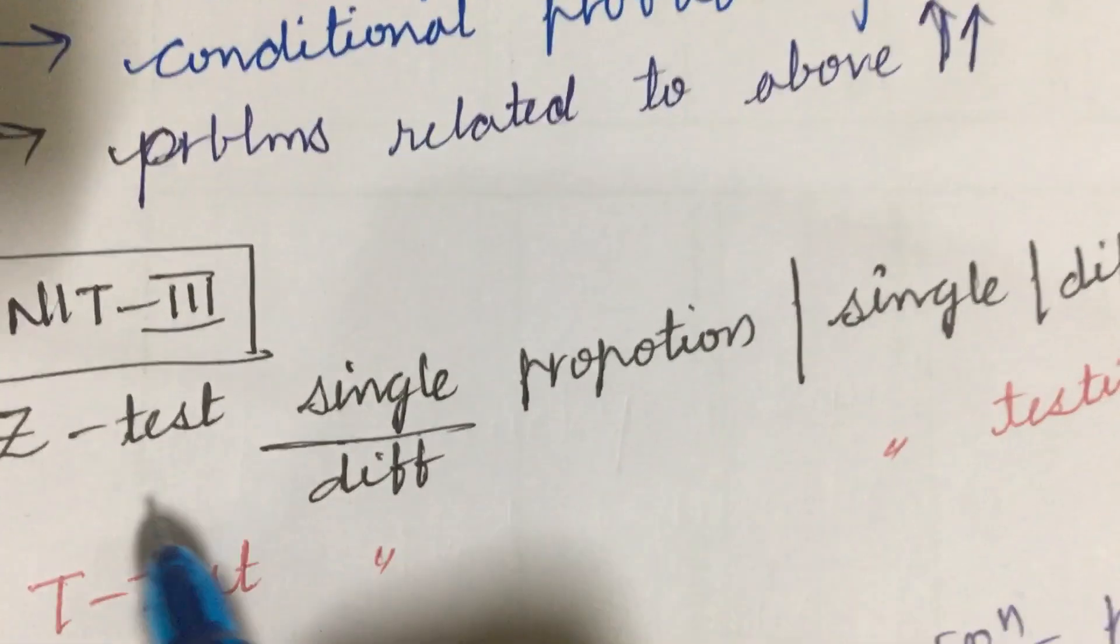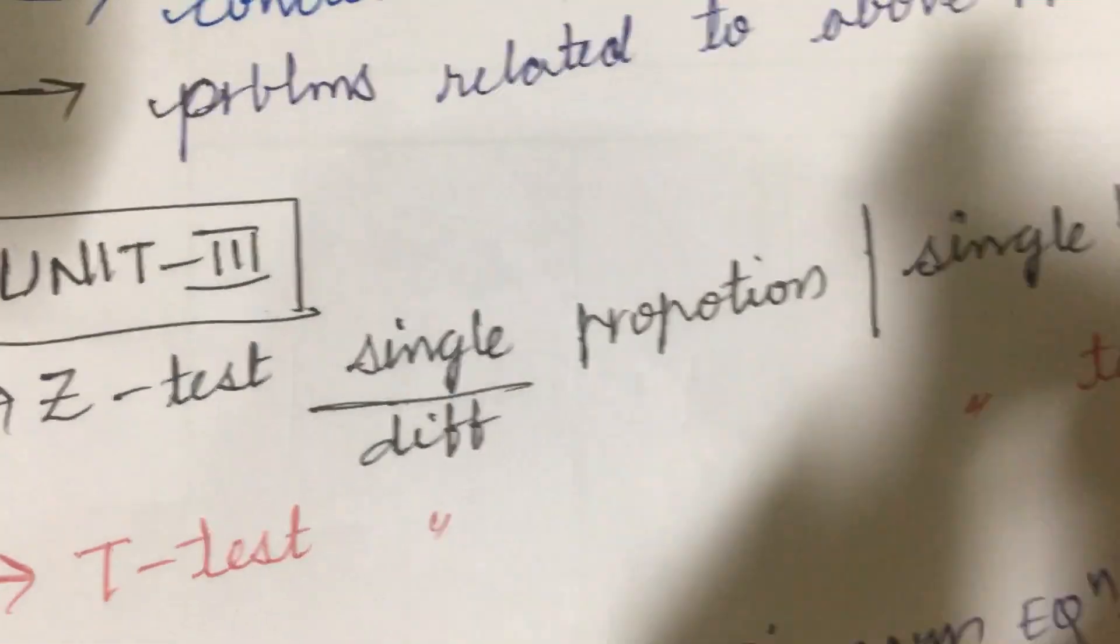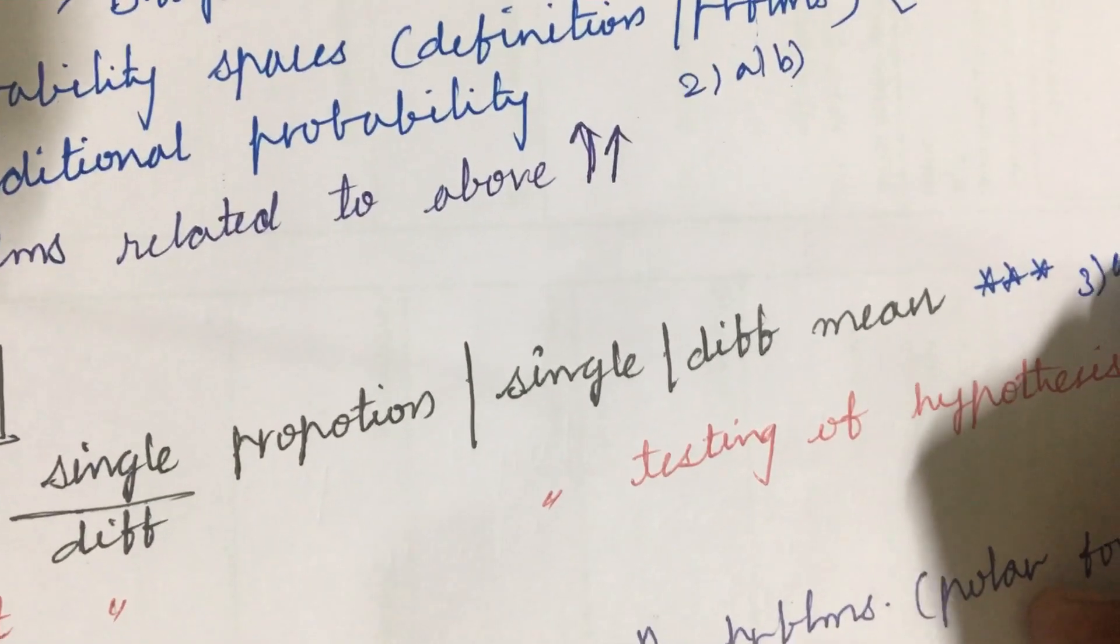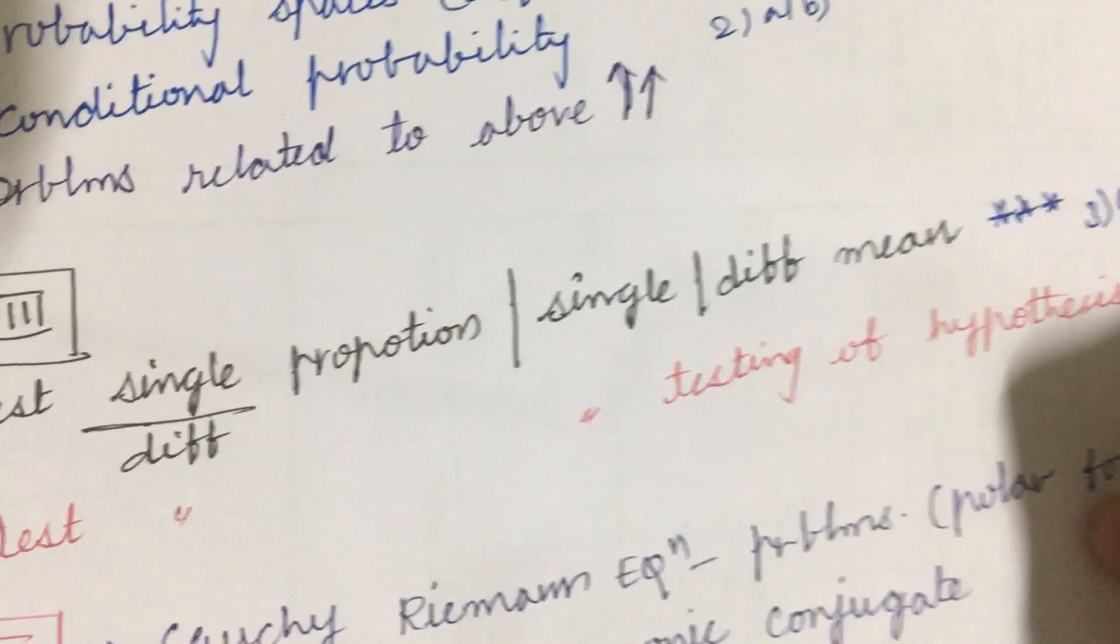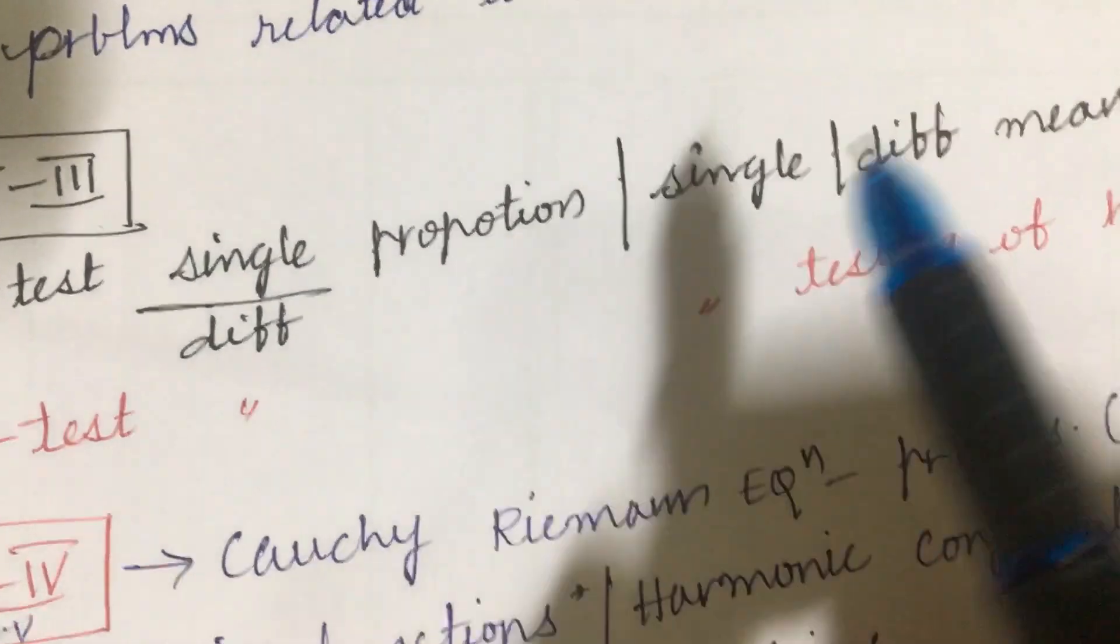As per the sequence of the units which I have given you who are working for the first time, the Z test as well as the T test. Based on the Z test you will be getting one question for sure and that is a gunshot question, that is 3A as well as 3B and 4A as well as 4B related to Z test.